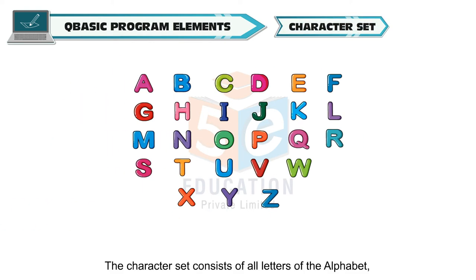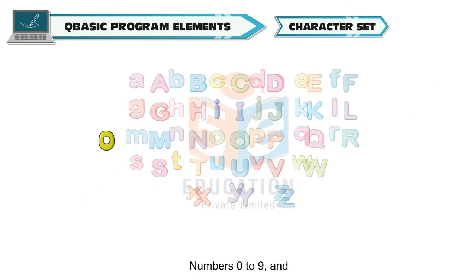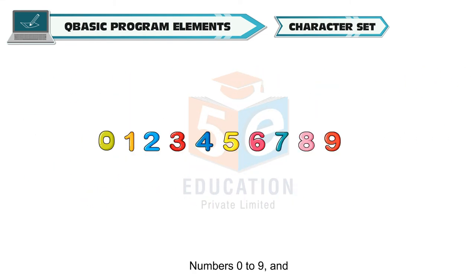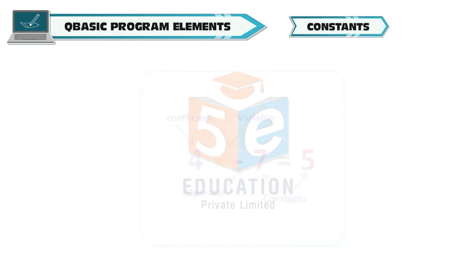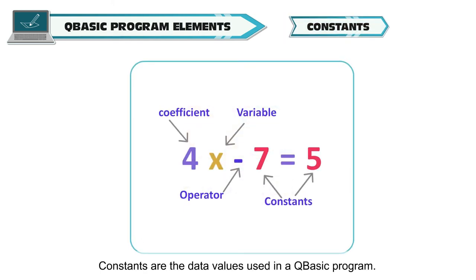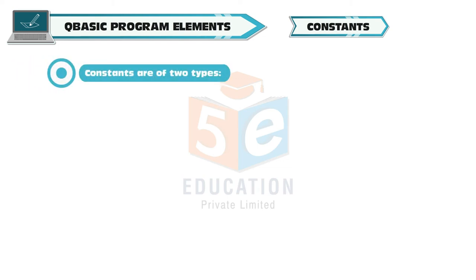Character set: The character set consists of all letters of the alphabet from A to Z in capital and small letters, numbers 0 to 9 and special symbols like plus, minus, forward slash, asterisk, brackets, etc. Constants: Constants are the data values used in a QBASIC program. A constant always remains fixed throughout the program. Constants are of two types.